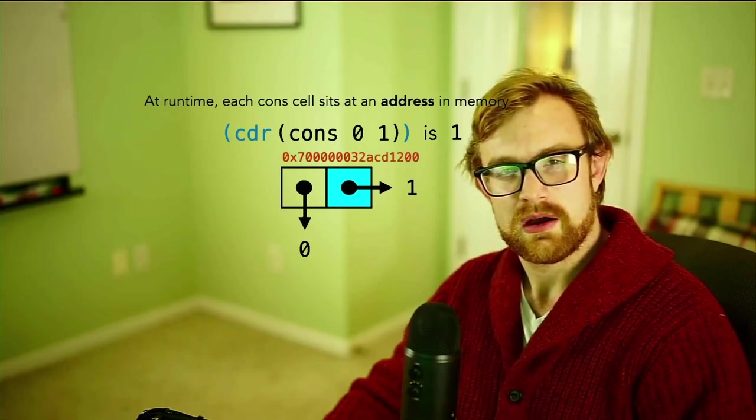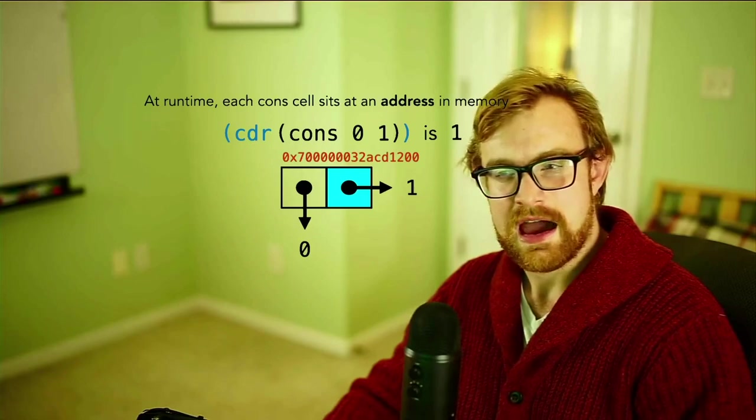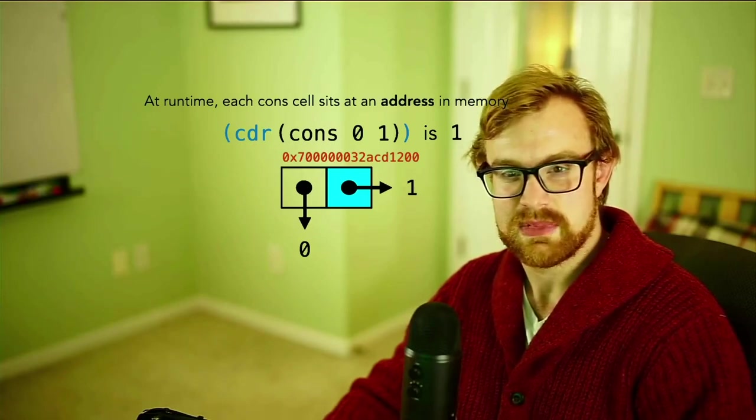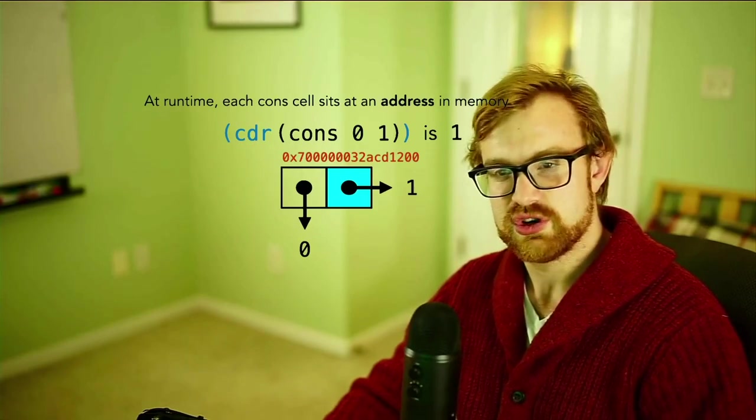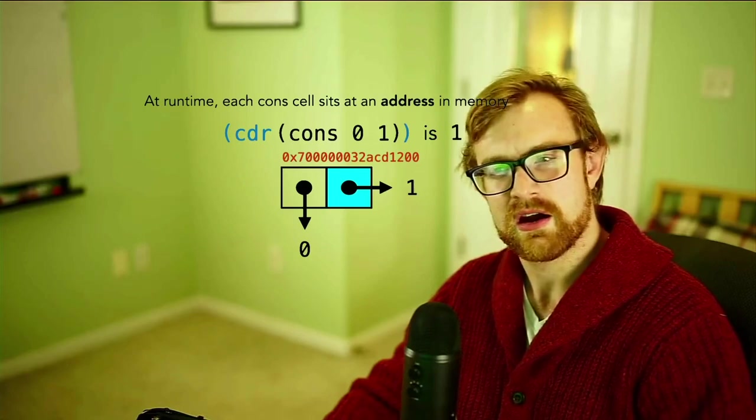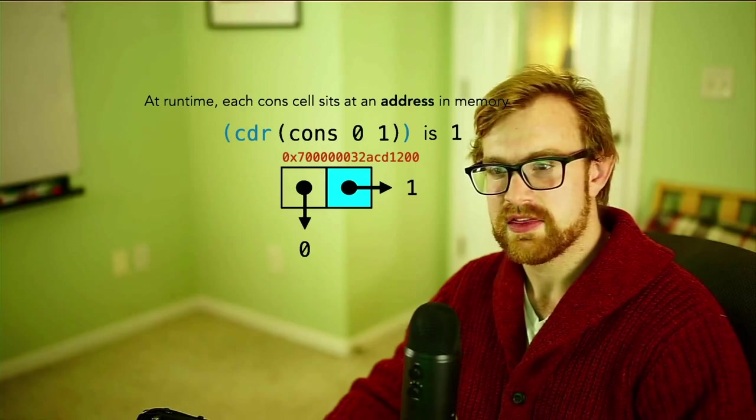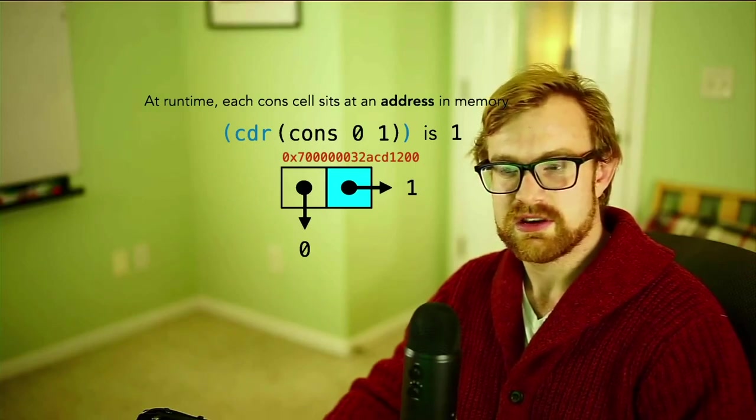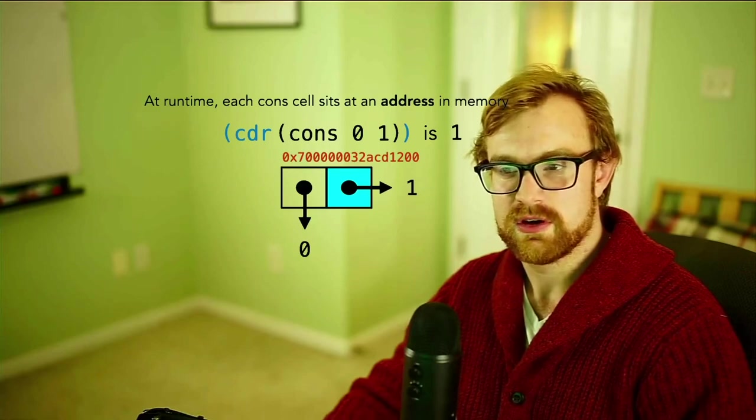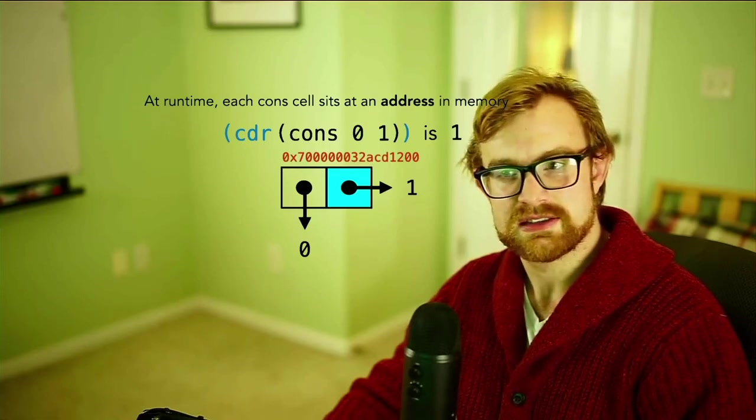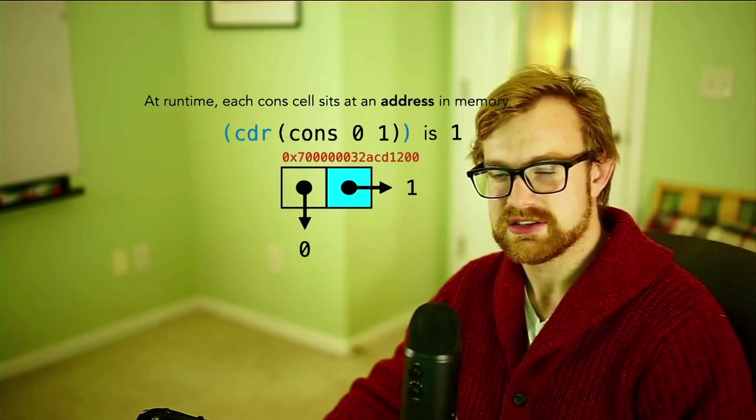Now at runtime, each cons cell actually represents an address in memory that contains two references to the car and to the cdr. So in this example here, I've got this cons cell then pointing at 0 for the car and 1 for the cdr, and the entire cons cell is located at this address in memory.